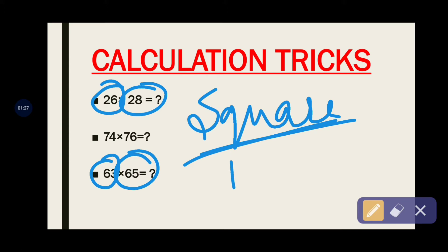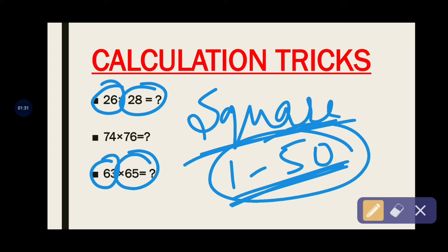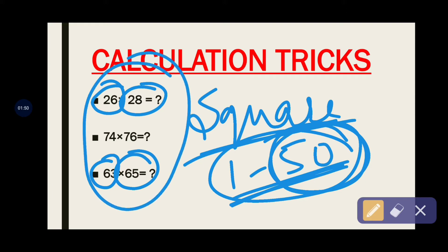How many squares? 1 to 50 squares — and these should be on your fingertips. Once you learn these 50 squares, in my upcoming classes I will teach you how to square any big number, whether it is 2-digit or 3-digit. This multiplication is completely dependent on the squaring of numbers.